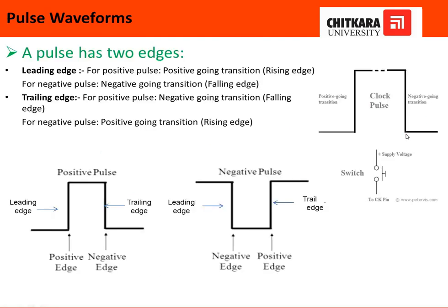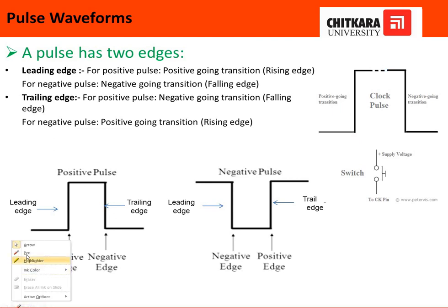To understand the pulse waveform, see this figure. When the switch is in the on condition it shows red, and when it is in the off condition it shows blue. Basically, it shows the transition of the waveform when we switch the system on or off. This is what we call a pulse waveform.